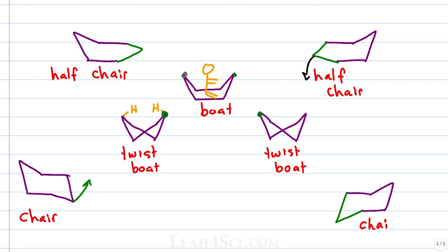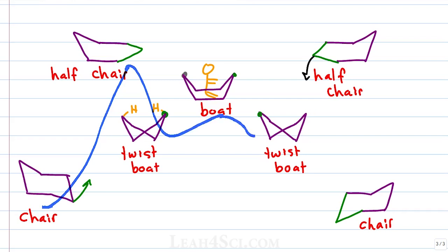On an energy diagram: you start out with a very stable chair, raise the energy all the way to the half chair, it goes down slightly for the twist boat, higher in energy for the boat, a quick down for the twist boat, then all the way up to the half chair, then all the way down to the stable chair conformation.